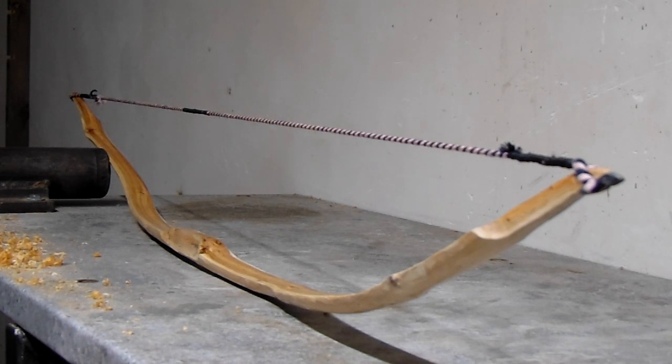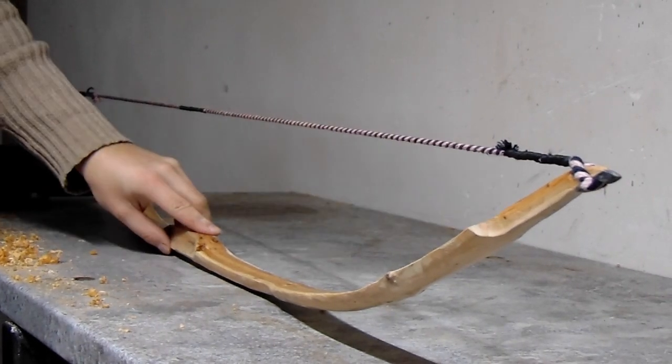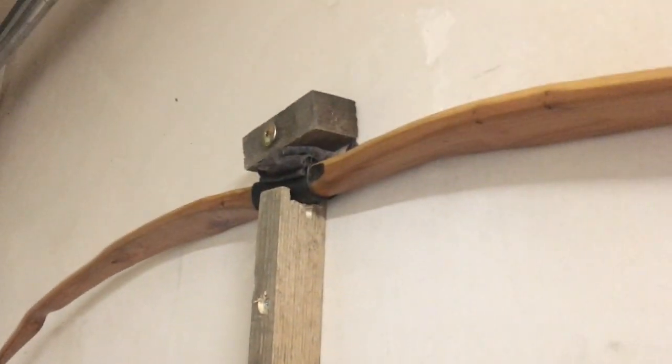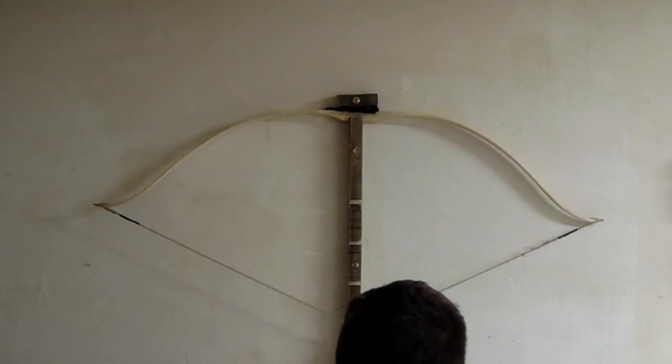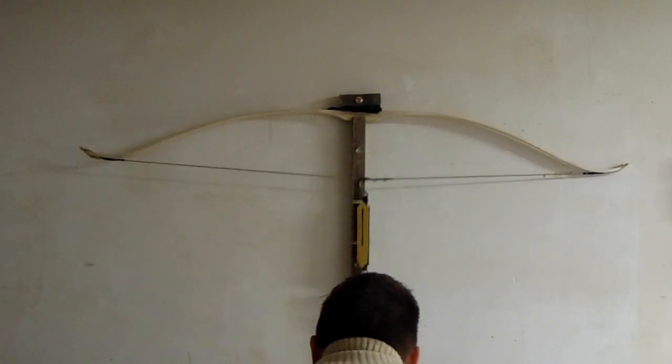Then we can string the bow. Its profile just after stringing can tell us a lot. If any limb will be stiffer, we will see it clearly right away. After balancing the strung profile, the bow should be back on the tillering tree. We pull it inch by inch, applying corrections after each drawing session, until we will reach the full draw.